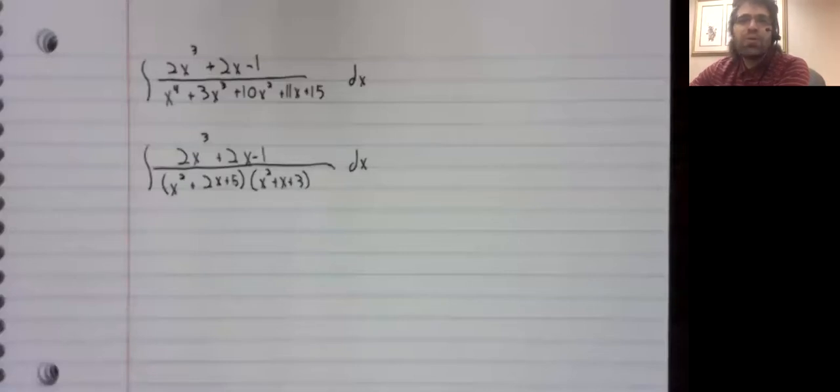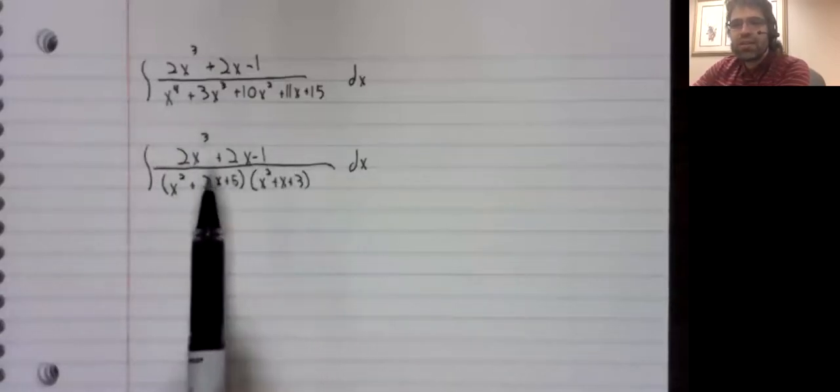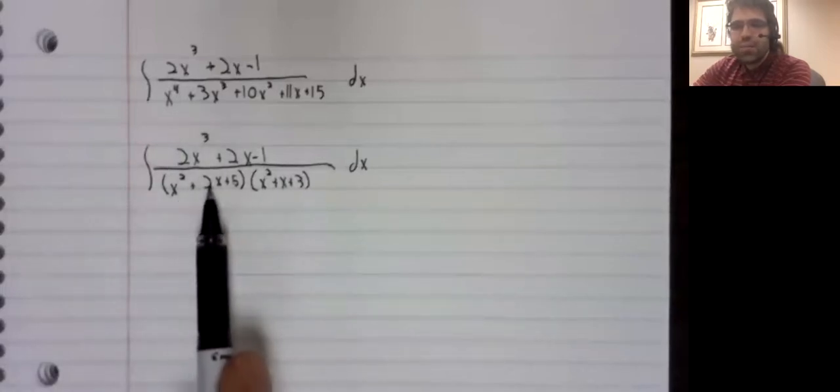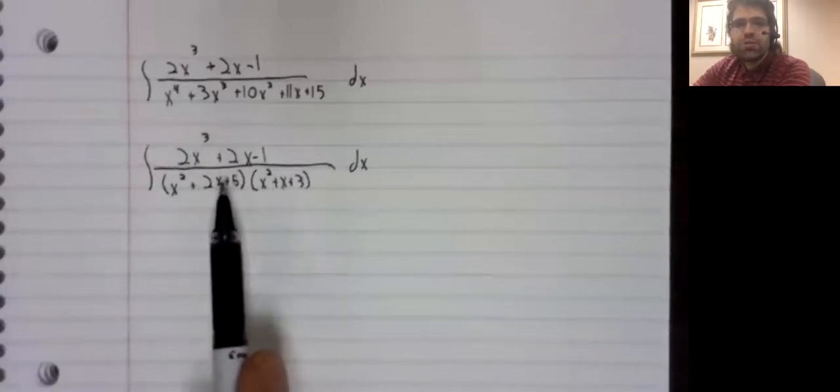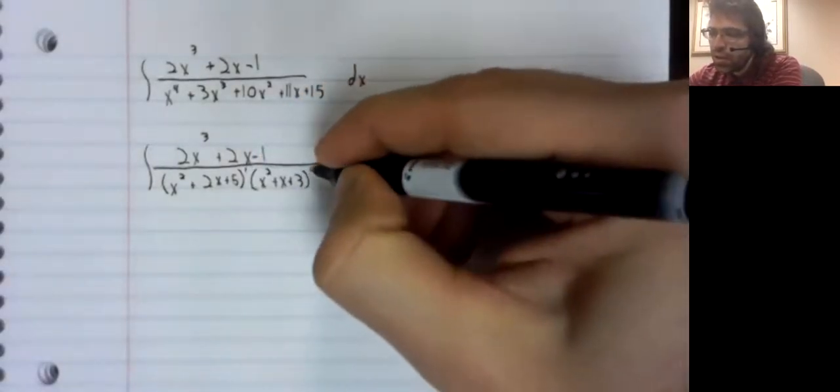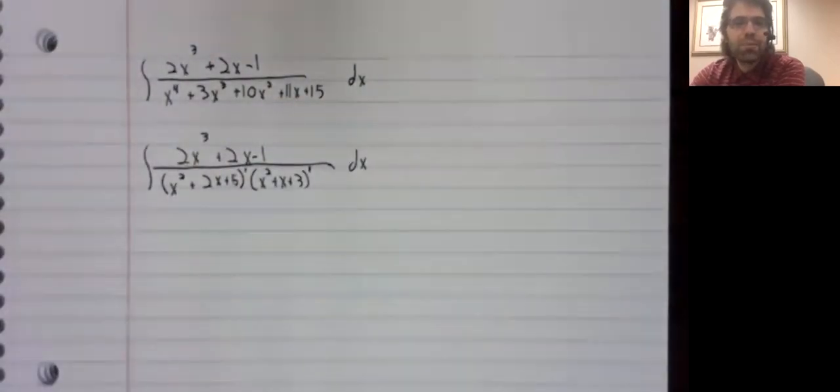But suppose we did say, okay, now that we have gotten this factorization, we'll proceed by hand. We have two irreducible quadratics in the denominator. They're both just raised to the first power. So the partial fraction decomposition becomes this.